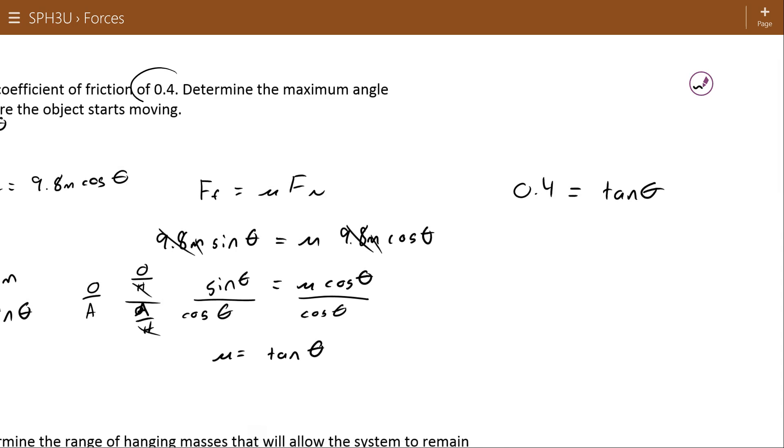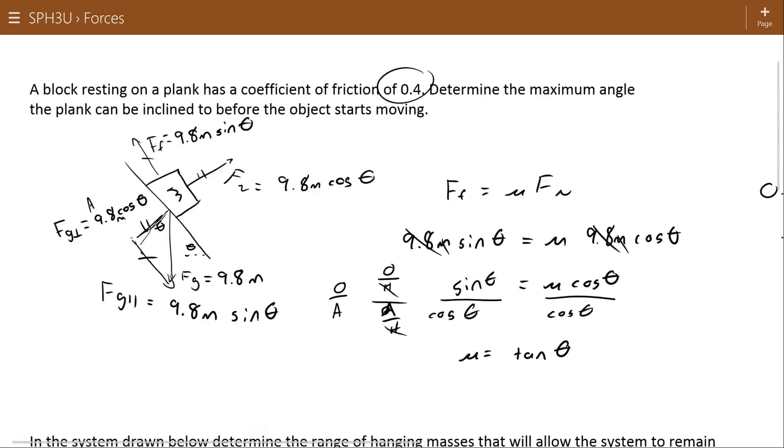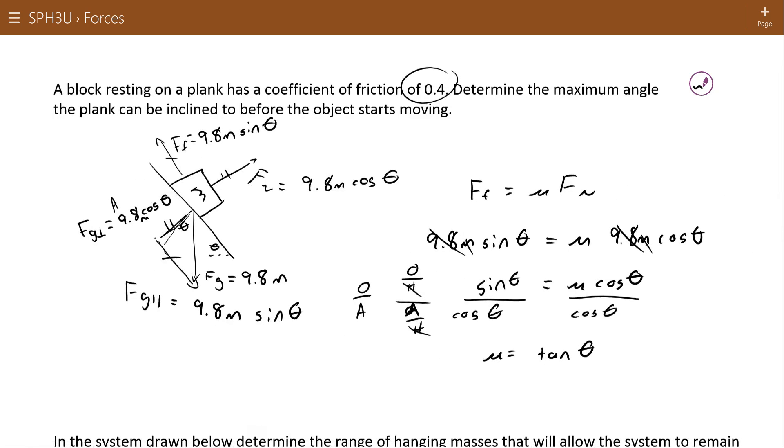So 0.4 equals tan theta, because we said in our question that the coefficient of friction is 0.4. And if I inverse tan both sides, I get 21.8 degrees. So that's the biggest incline I can set up here before this object's going to start to move. But this expression is a general expression regardless of which question you're looking at.